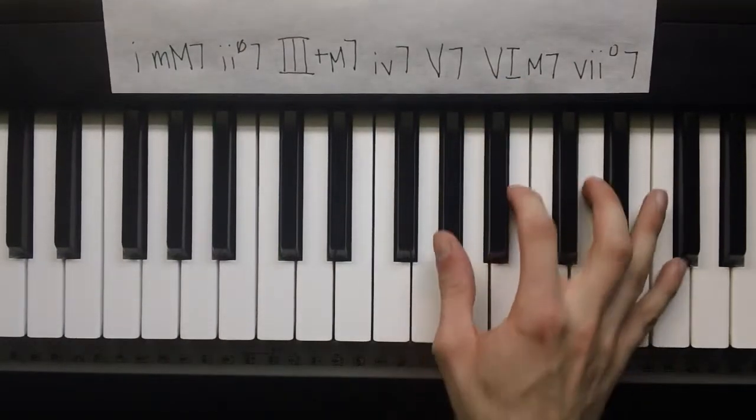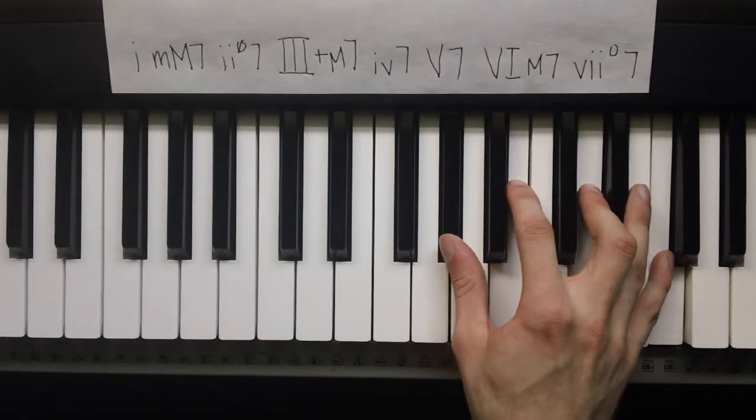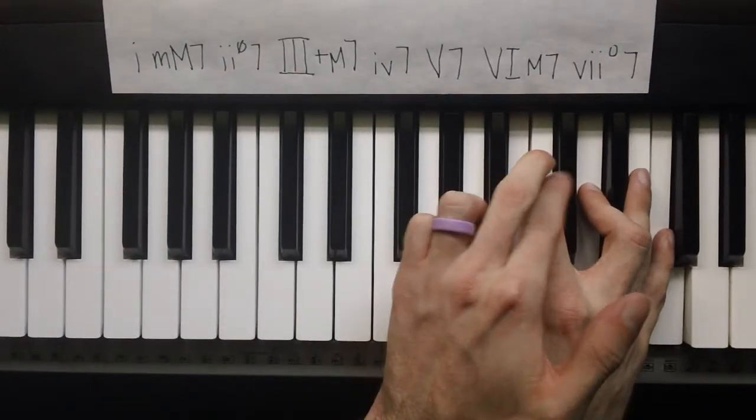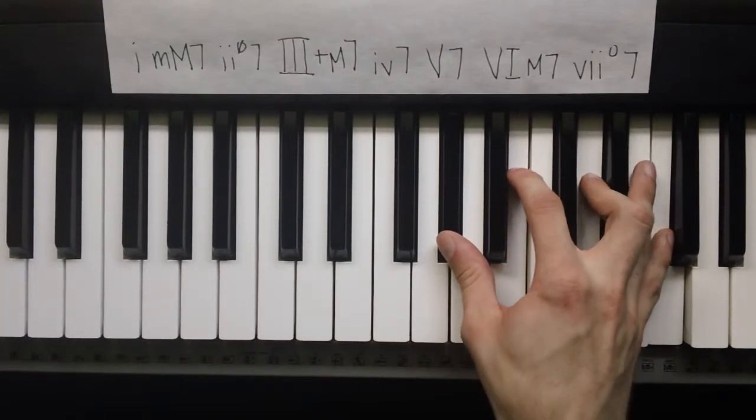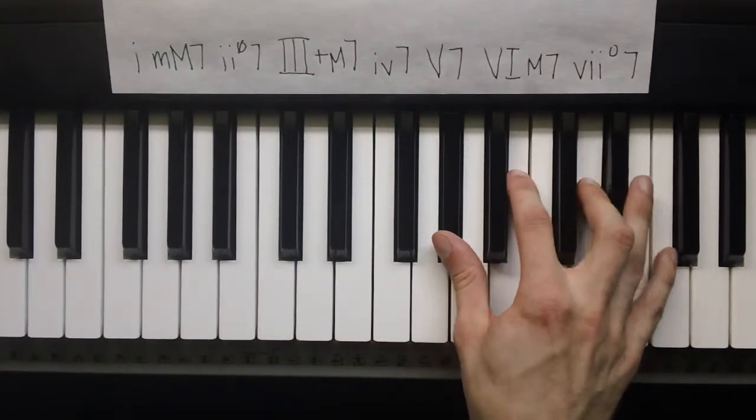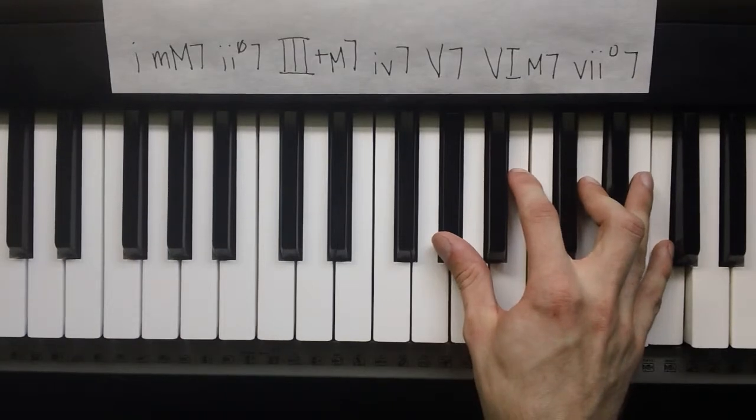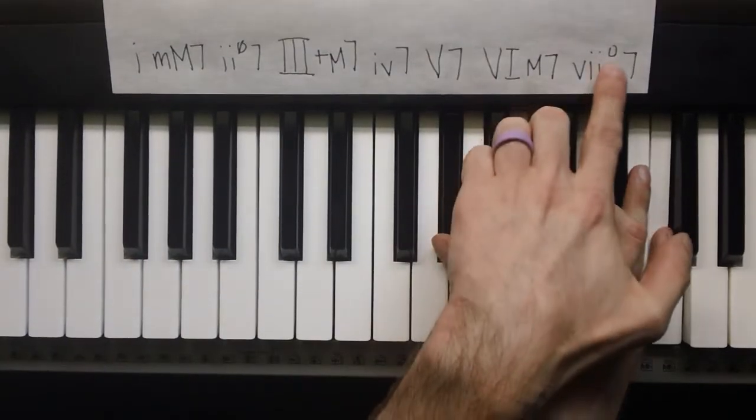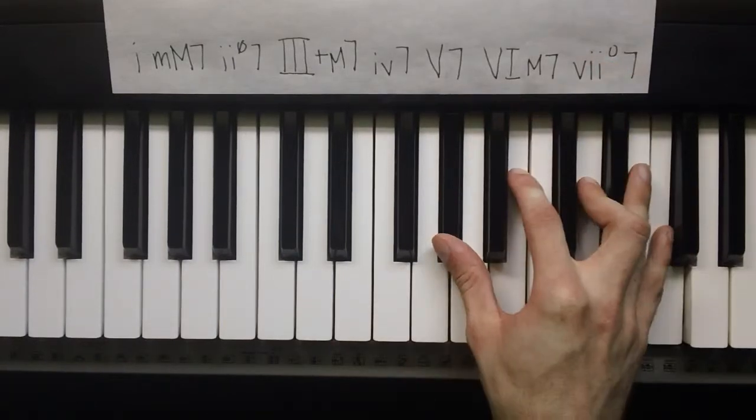And last but not least, if we build it on the 7th note, we get a 2-2-2. That is a fully diminished 7th chord. Yeah, that sounds crazy too. So that gets lowercase vii, and then a degree for diminished 7.